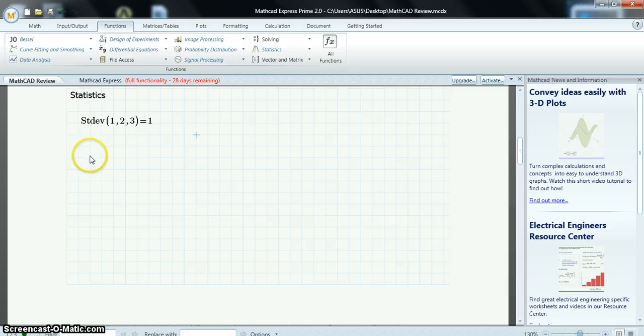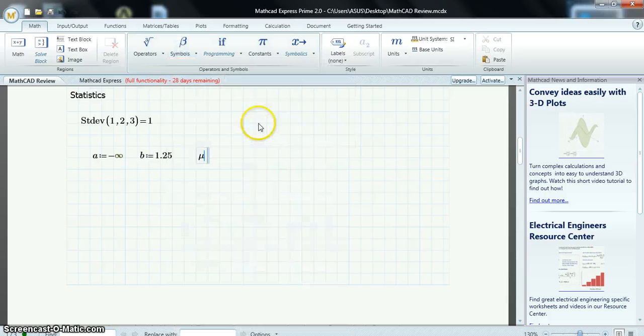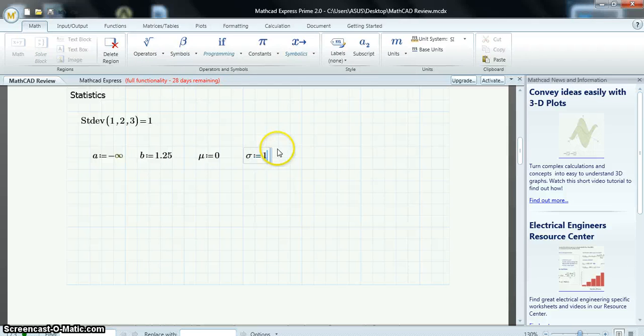I'll do a normal probability example. I'll define A to be negative infinity. So, I'll go to Math, Constants, Infinity. B is going to be 1.25. And, Mu, right here. This will be my mean. Zero. Standard Deviation. Sigma. It'll be 1.